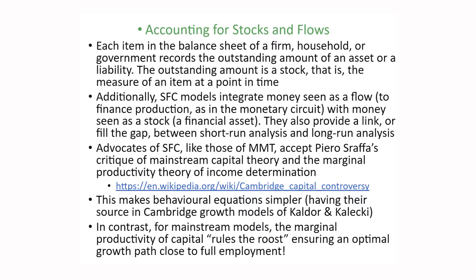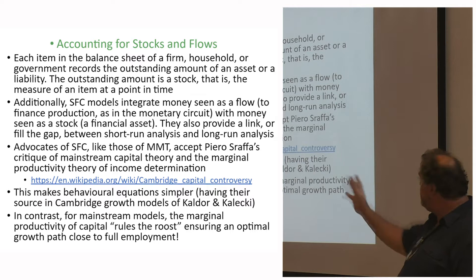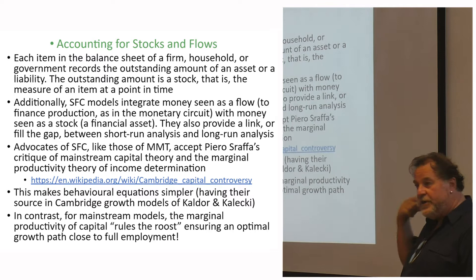At a basic level, each item in the balance sheet of a firm, household, or government records the outstanding amount of an asset or a liability. The outstanding amount on the balance sheet is a stock — a measure of an asset at a point in time. But what has to be integrated with that is the recognition of flows.